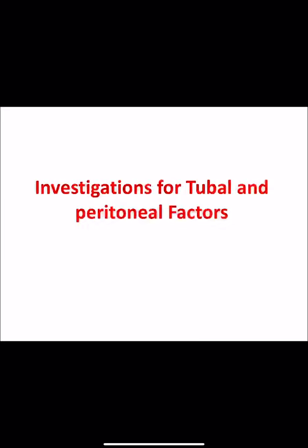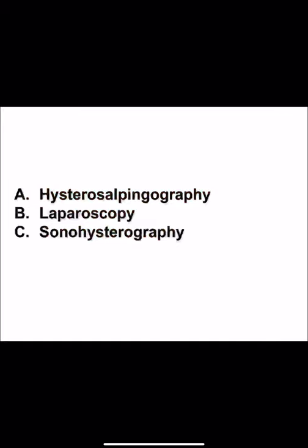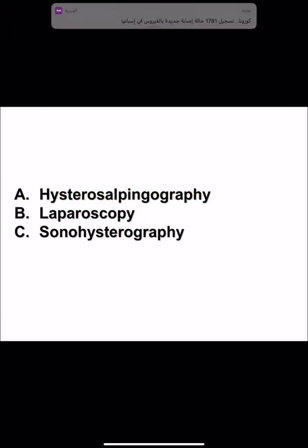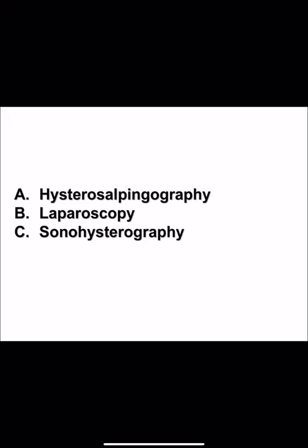There are three major investigations for tubal and peritoneal factor. First, hysterosalpingography (HSG): a radiographic investigation done on day 8 to 10 of the cycle. A radio-opaque dye is injected via a special cannula through the cervix into the uterine cavity, and X-ray shows passage of the dye through the fimbrial end of the tube — indicating tubal patency. It also provides information about uterine shape, congenital anomalies, polyps, submucous fibroids, septum, and other abnormalities.